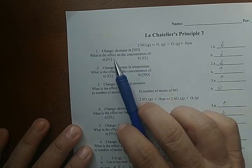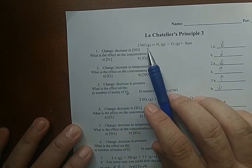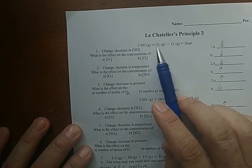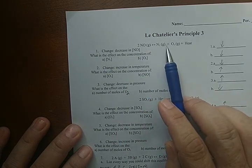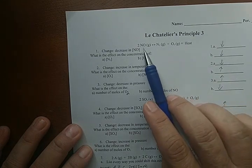So what will the effect be on the concentration of N2? As this thing shifts to the left, it uses up the stuff on the right. How do you make the NO? You use these up. Think of these as the reactants and that as the product if we're going to the left.